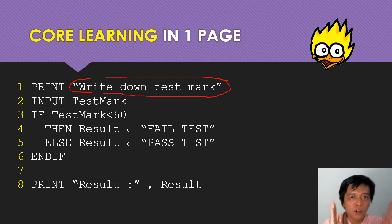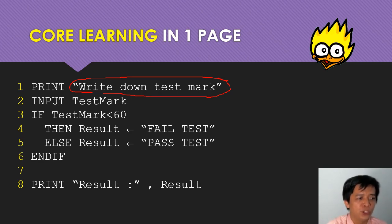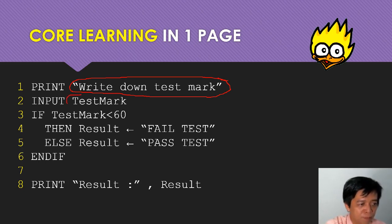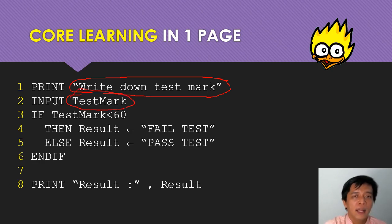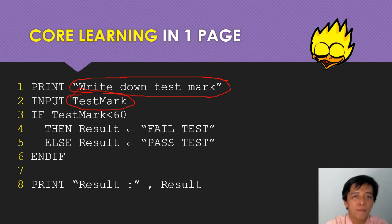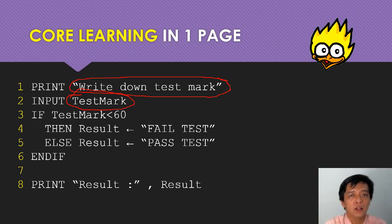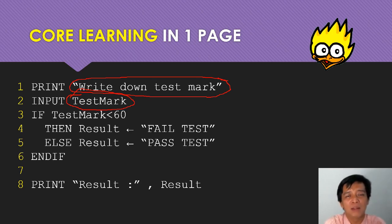The first time it needs your imagination. The first time the computer is showing: write down your test mark. Then the computer will ask you to type something, and it's called test mark. Any numbers that you type, it is stored in the computer's mind as test mark. You can name the variable anything, but this variable is named as TestMark.